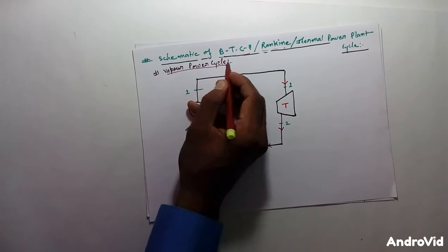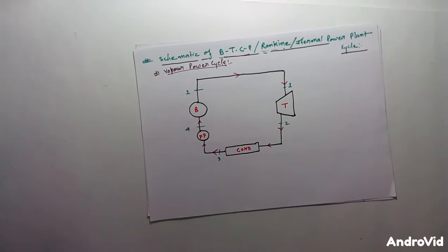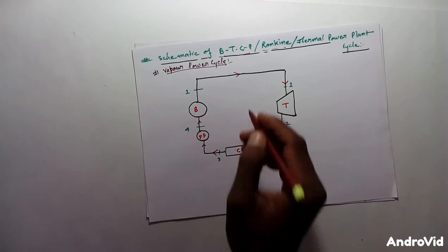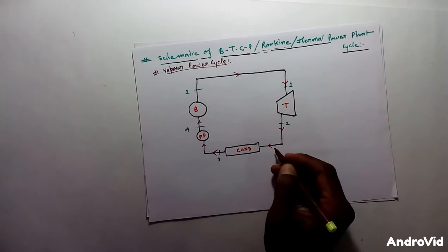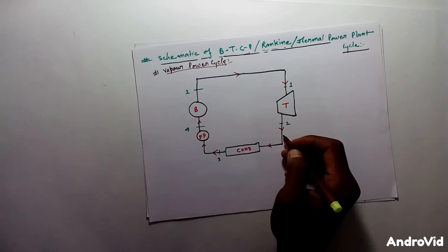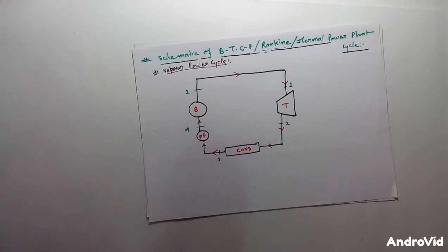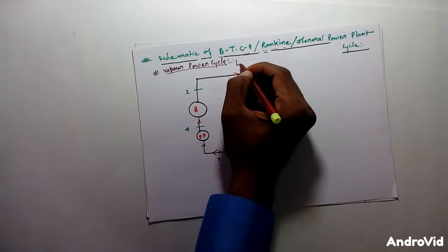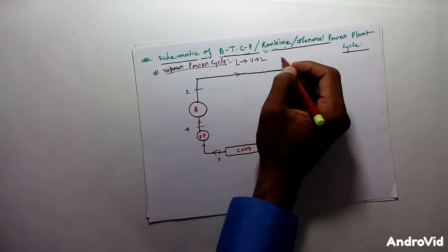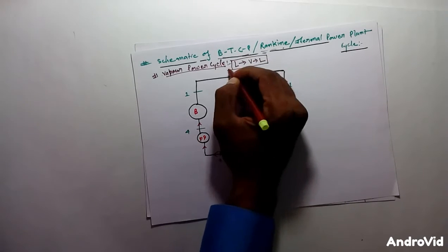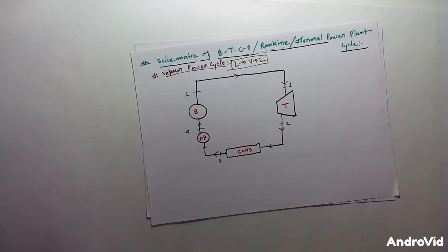Why do we call it a vapor power cycle? We call it a vapor power cycle because in each and every process of this cycle there is a phase change — from liquid to vapor and from vapor to liquid. Phase changes occur, that's why we call it a vapor power cycle. In a gas power cycle, there is no phase change; gas is never turned into liquid.